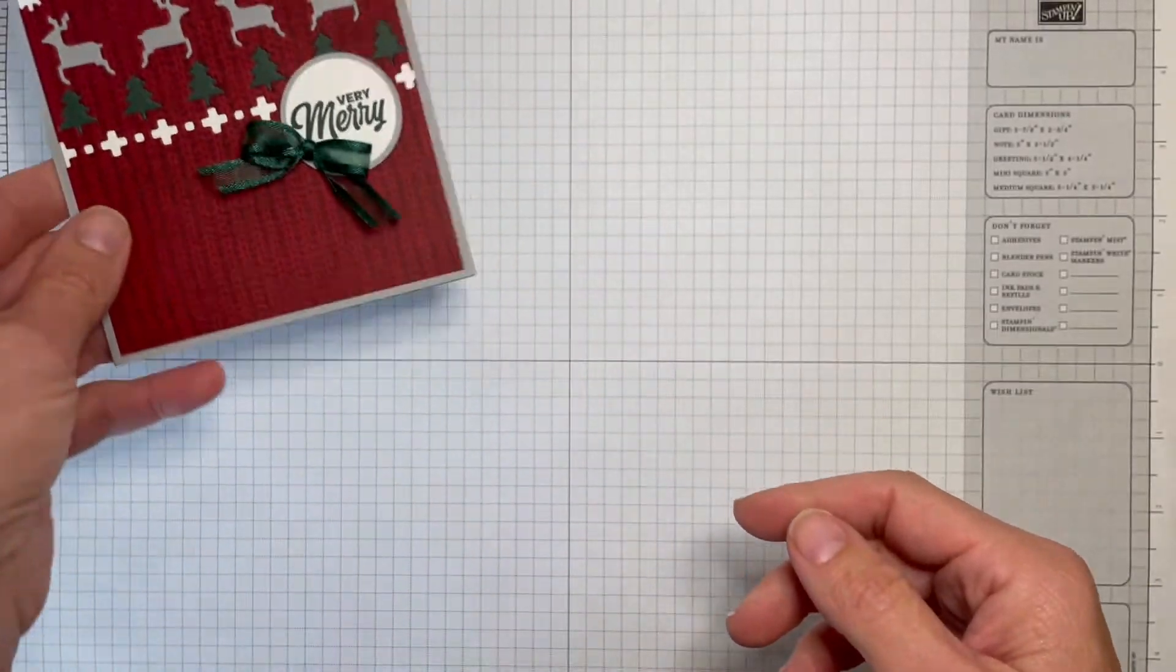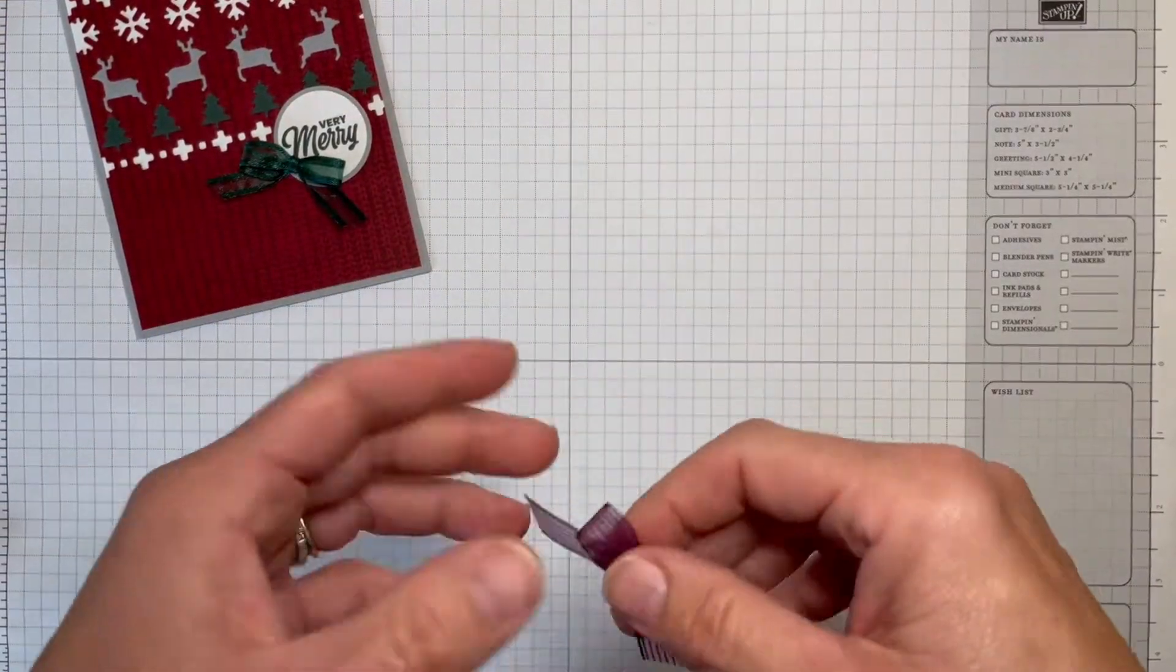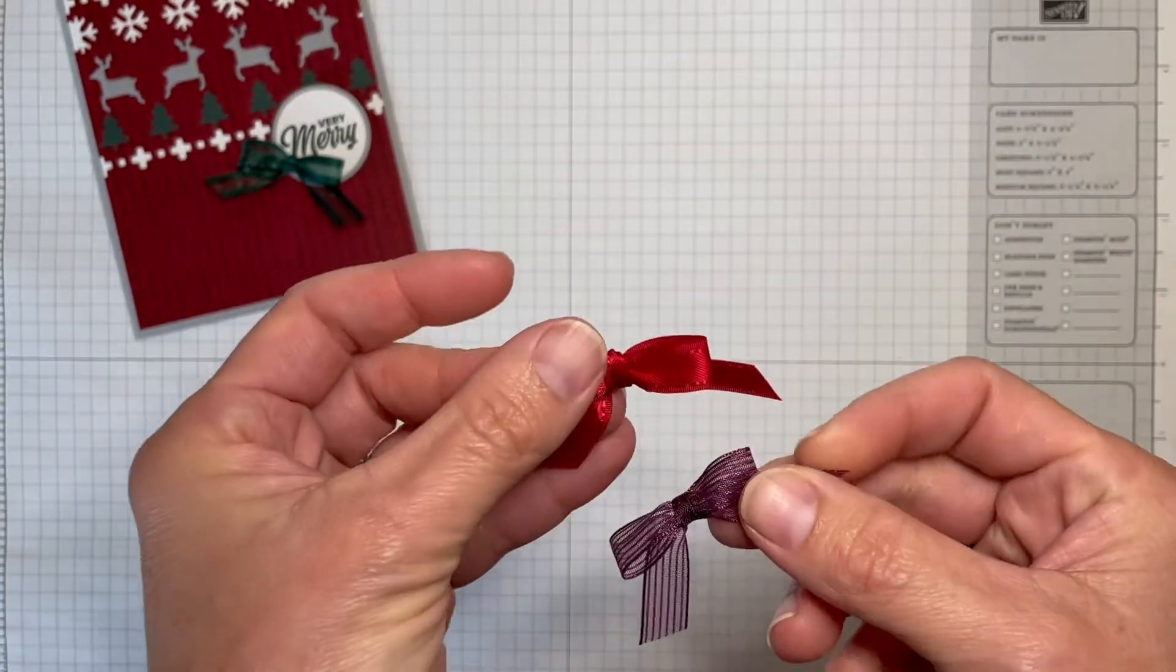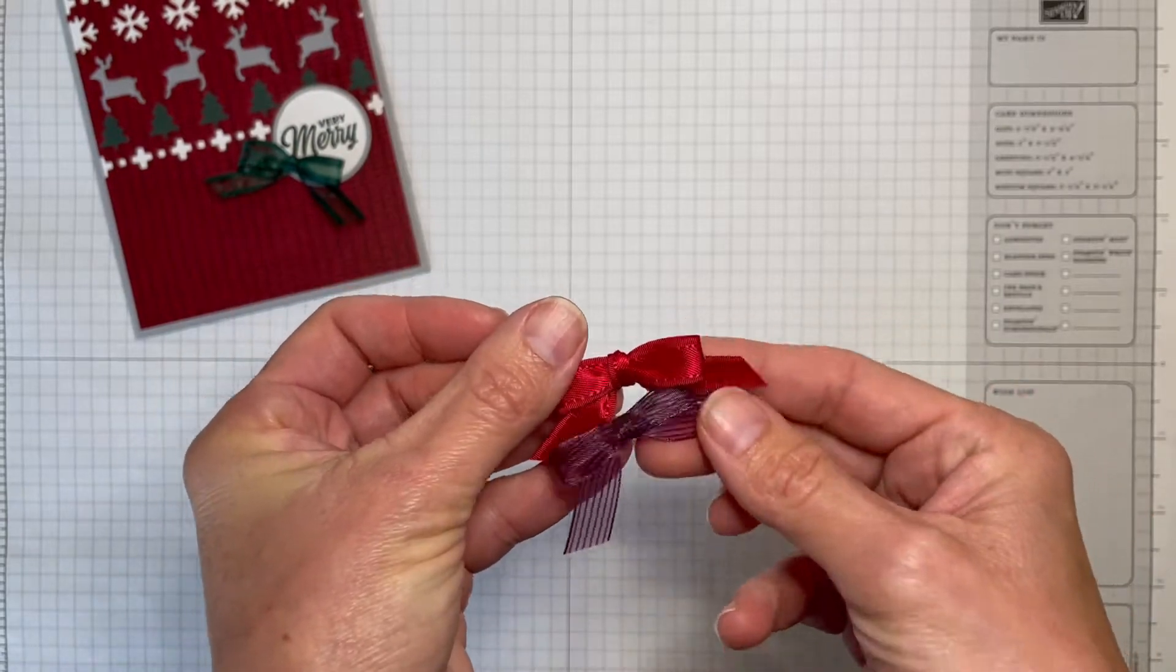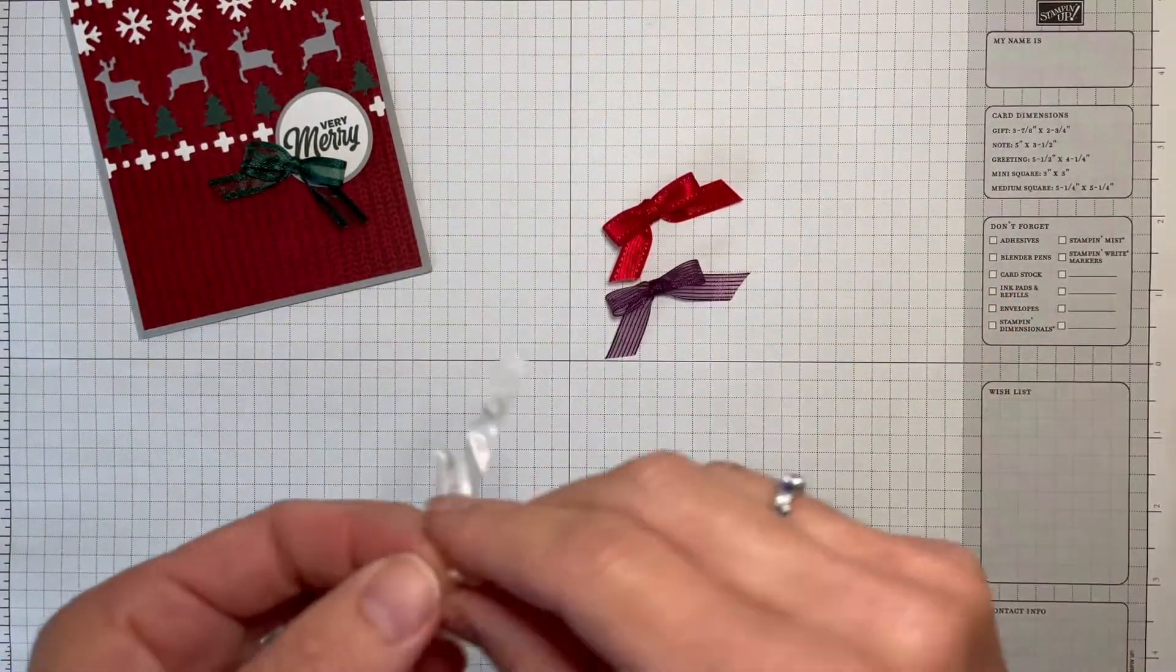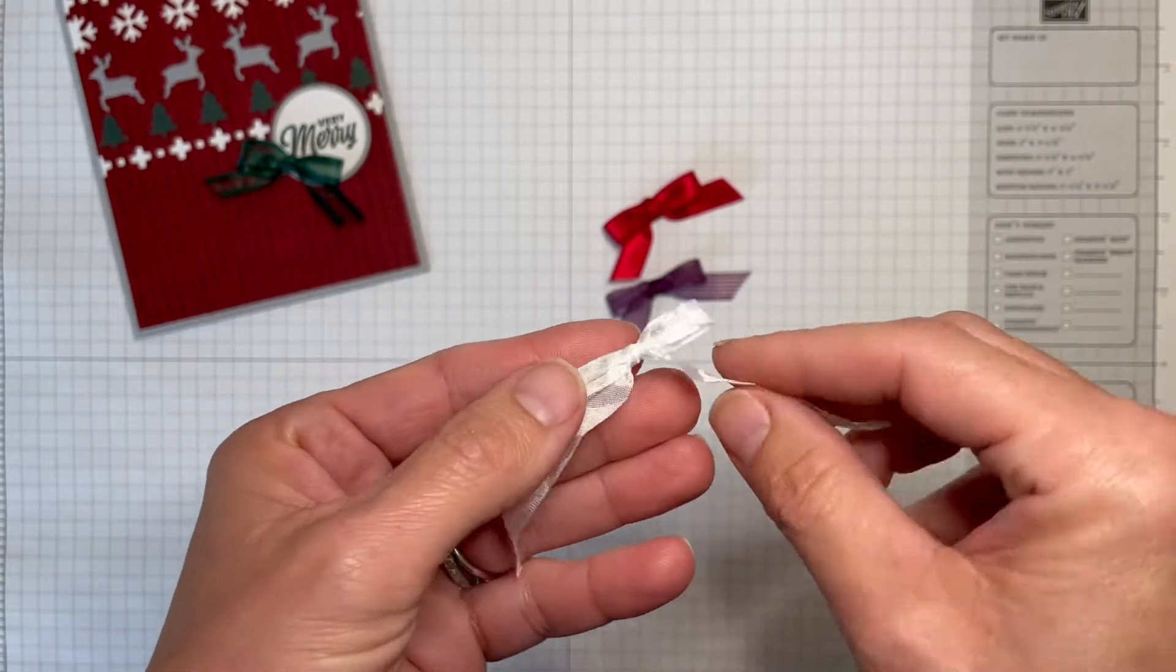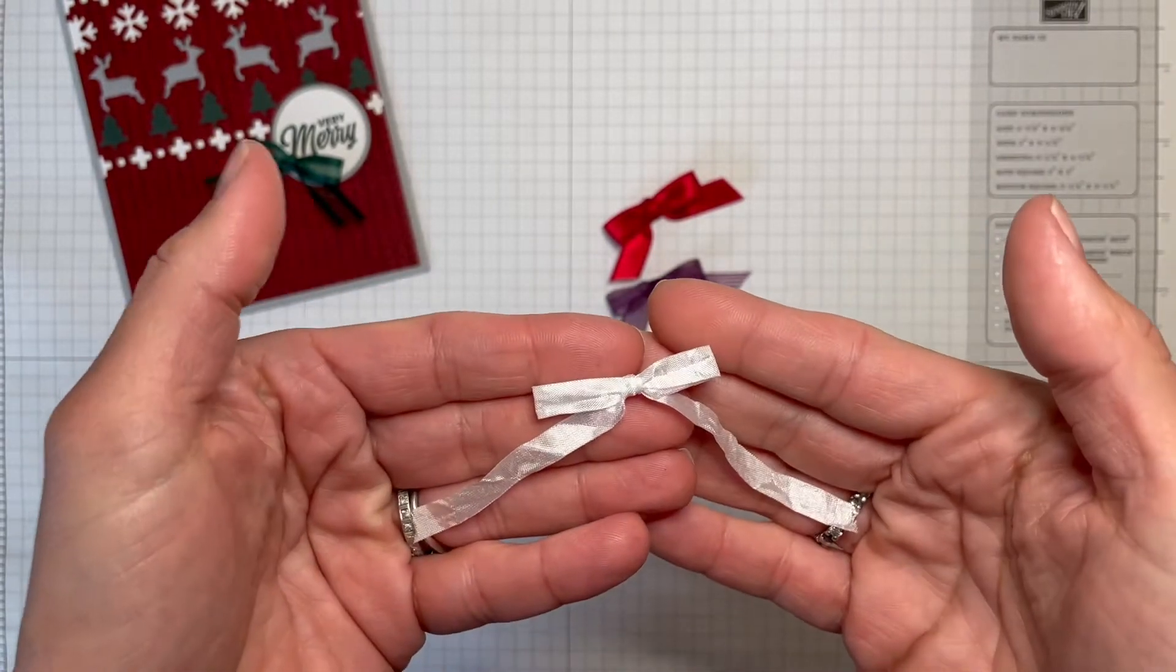Let me show you a couple other ribbons that I use. This one, here's the red, just gives a nice little look. Then another favorite, because you can make this any color you want with your stamp and blend, so you can color the crinkled seam binding ribbon. You get a nice cute little bow.